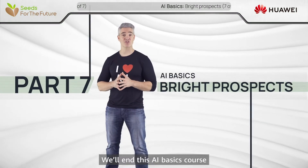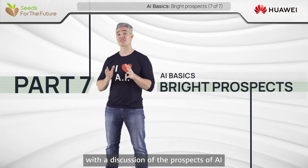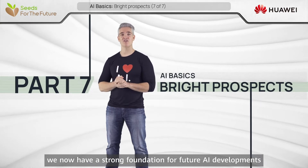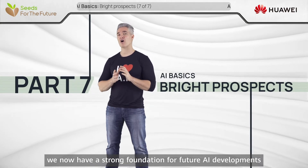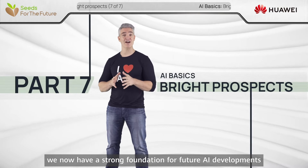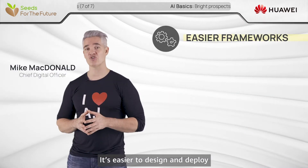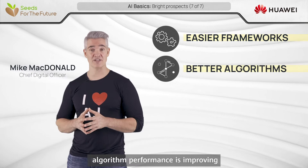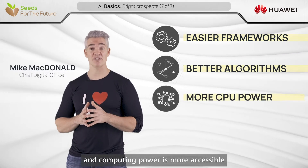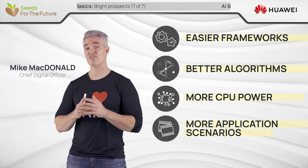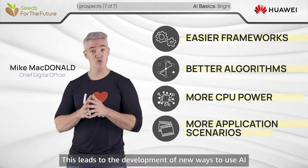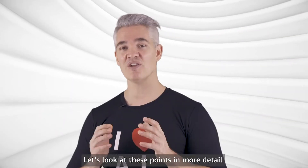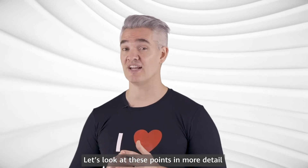We'll end this AI basics course with a discussion of the prospects of AI. Generally speaking, we now have a strong foundation for future AI developments. It's easier to design and deploy, algorithm performance is improving, and computing power is more accessible. This leads to the development of new ways to use AI. Let's look at these points in more detail.